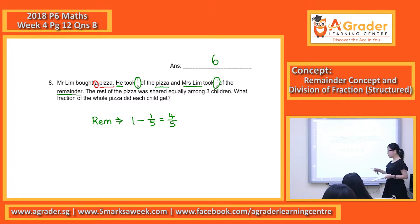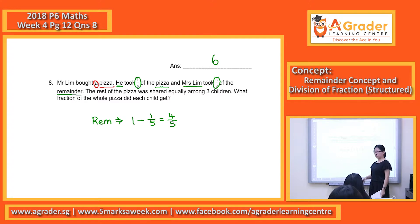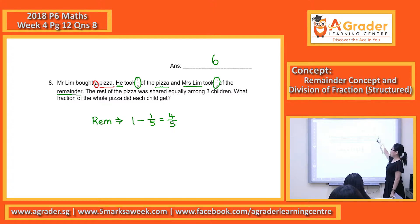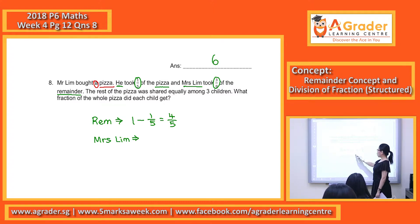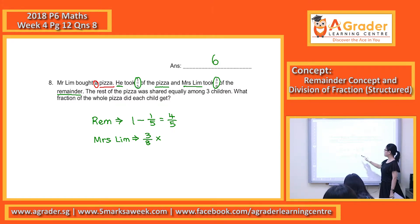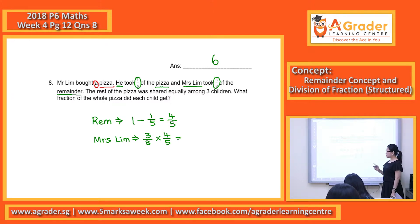So when the remainder is four-fifths — just like in question 5 where we talked about the 'of' meaning multiply — three-eighths of the remainder means three-eighths times four-fifths. We do this step to find the portion of the whole pizza that Mrs. Lin took.